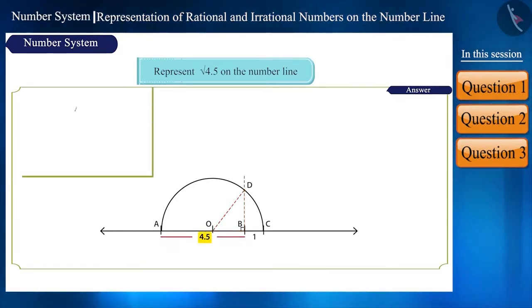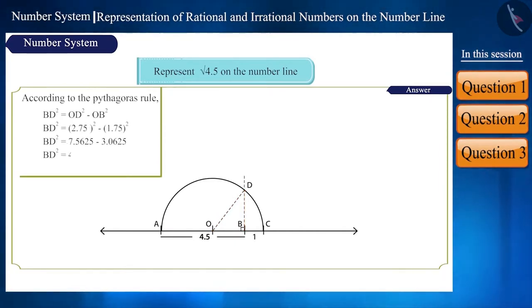We know the length of AB is 4.5 and OA is 2.75. We will get OB as 1.75. In triangle OBD, on applying the Pythagoras theorem, we can find the length of BD. We will get BD as root 4.5.